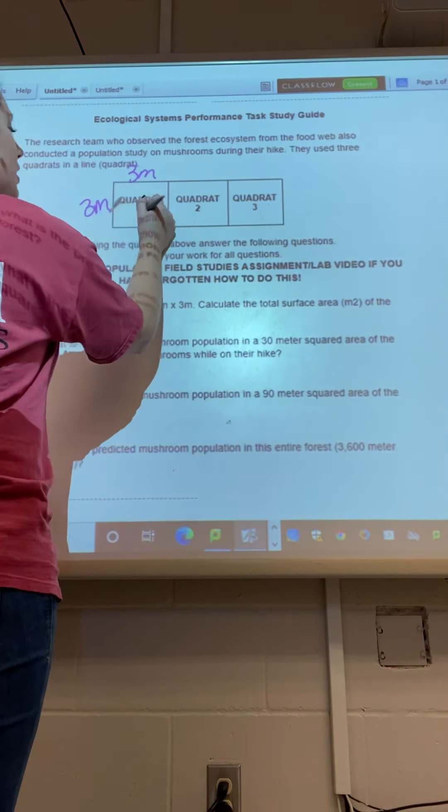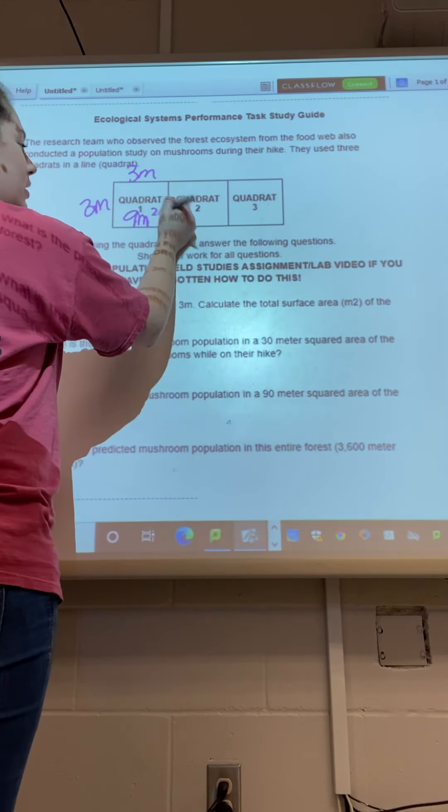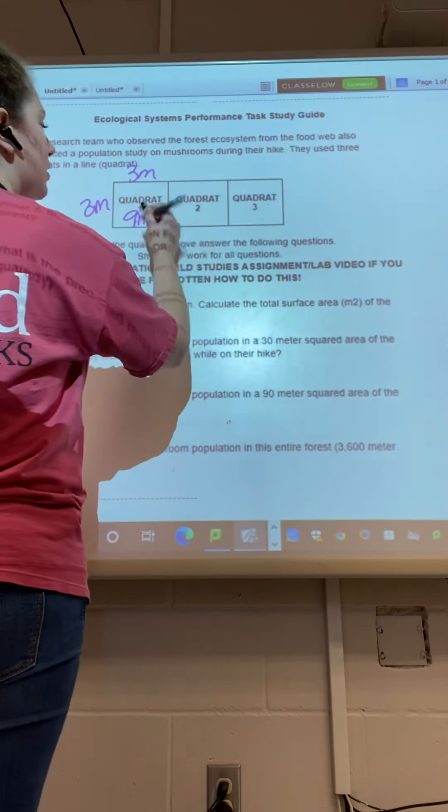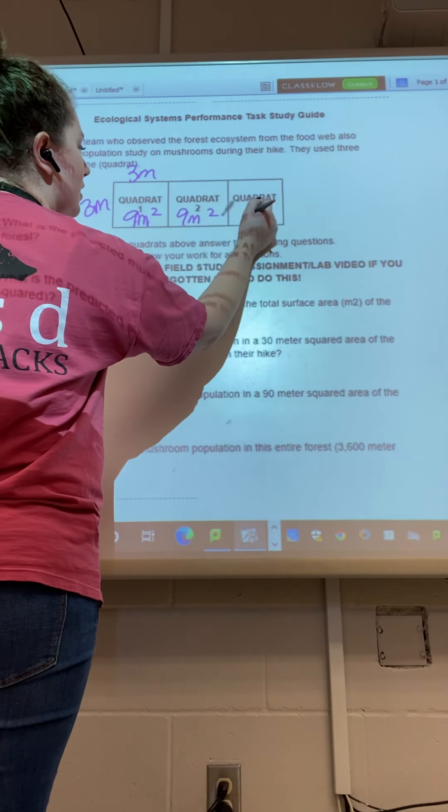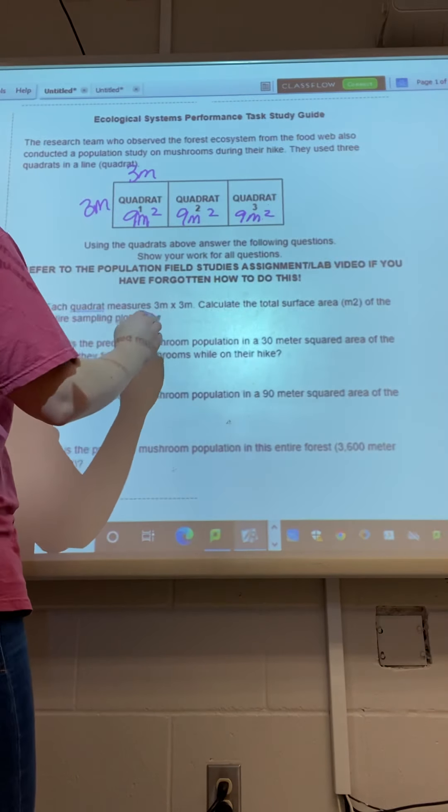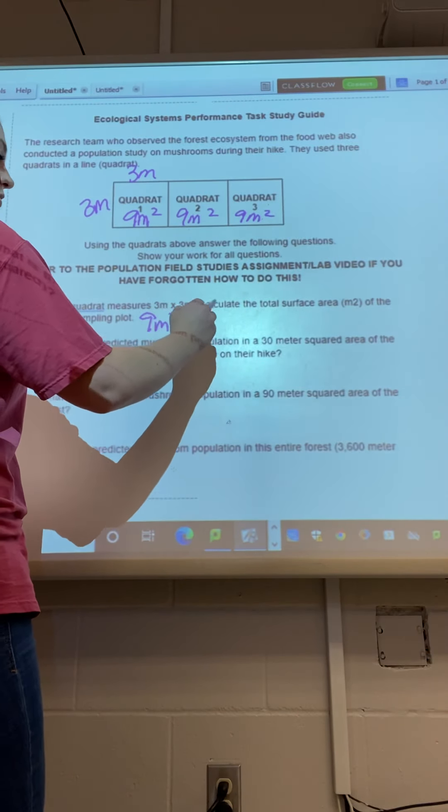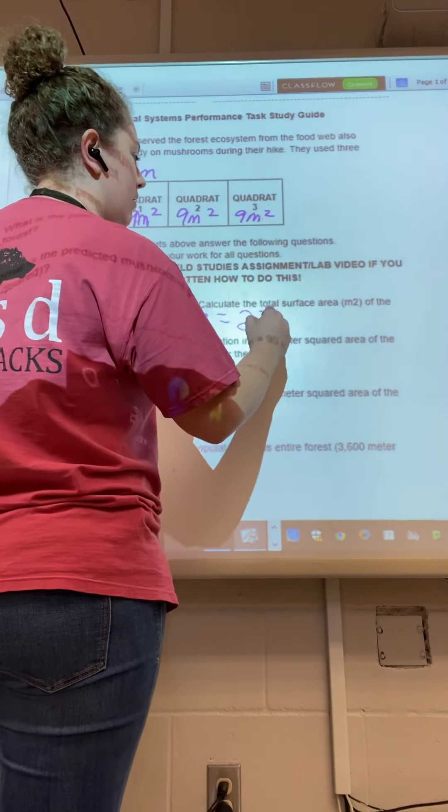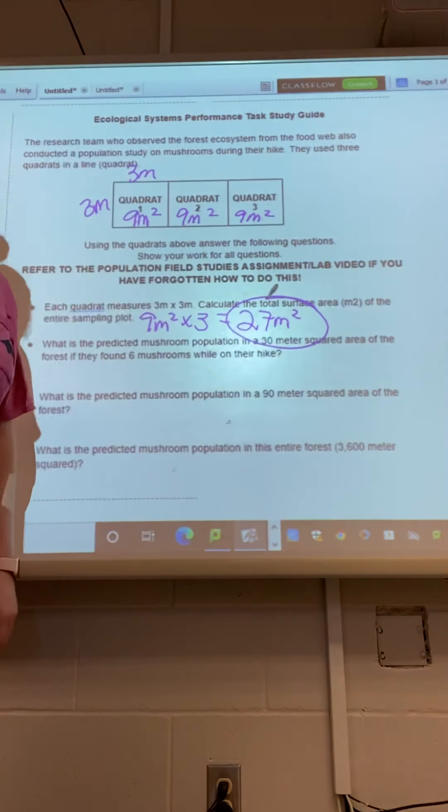So three times three, this one is nine meters squared and they want to know the whole thing. So this one's nine, this one's nine, this one's nine meters squared. So nine meters squared times three equals 27 meters squared. That's your final answer.